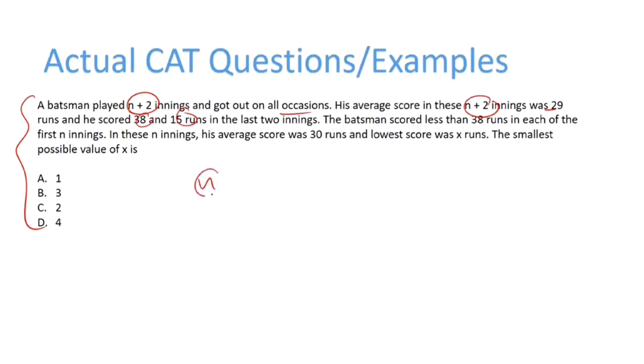So now we can split it into n innings and 2 innings. His average for these 2 innings will be (38+15)/2 which is 26.5, and his average in the first n innings is given as 30, and his final average is given as 29.